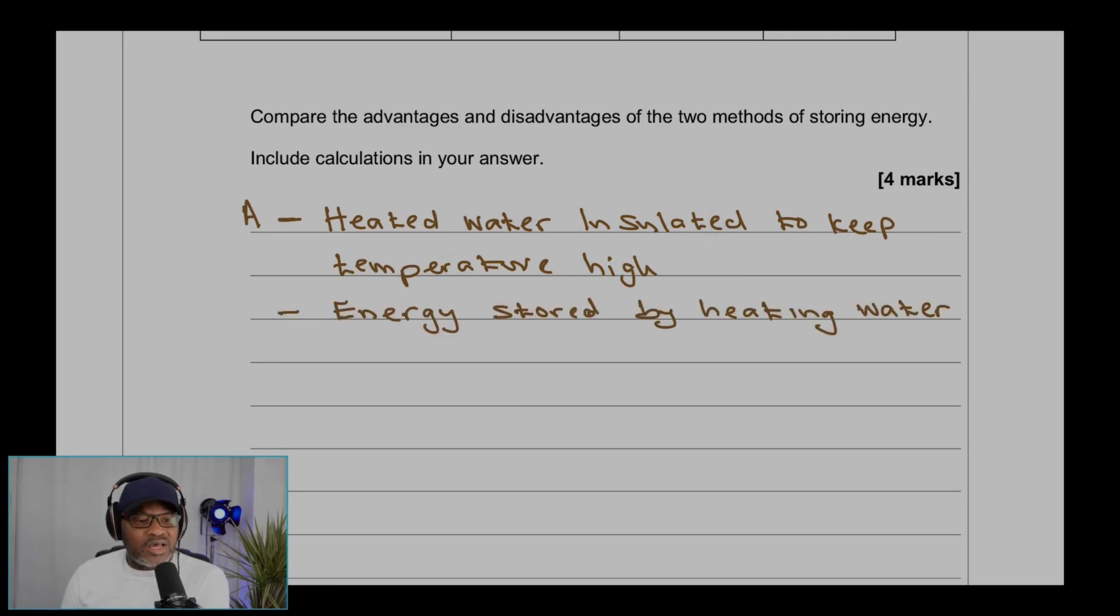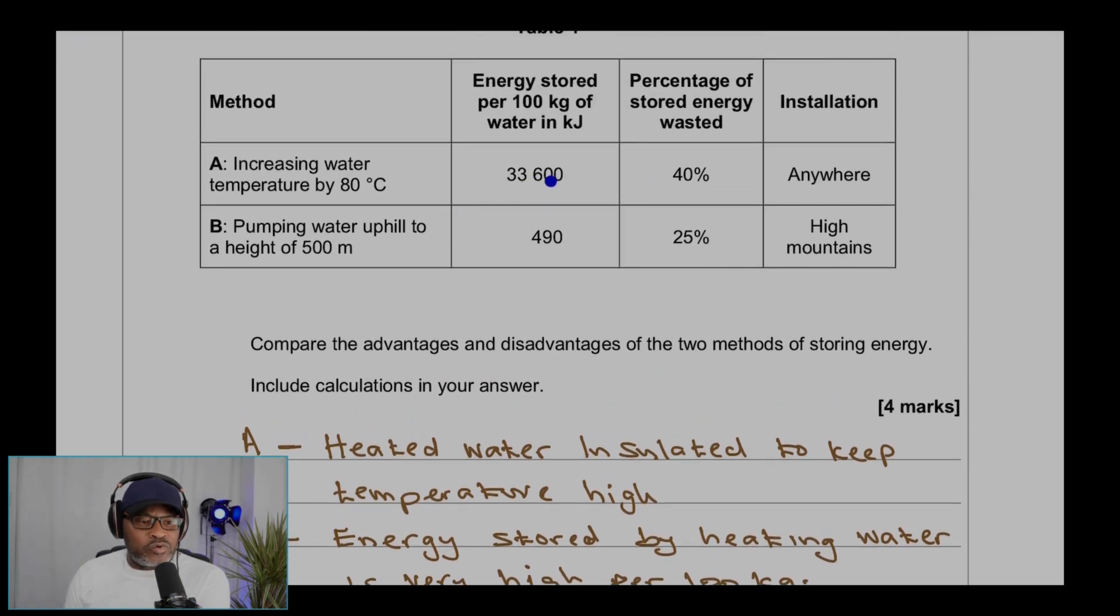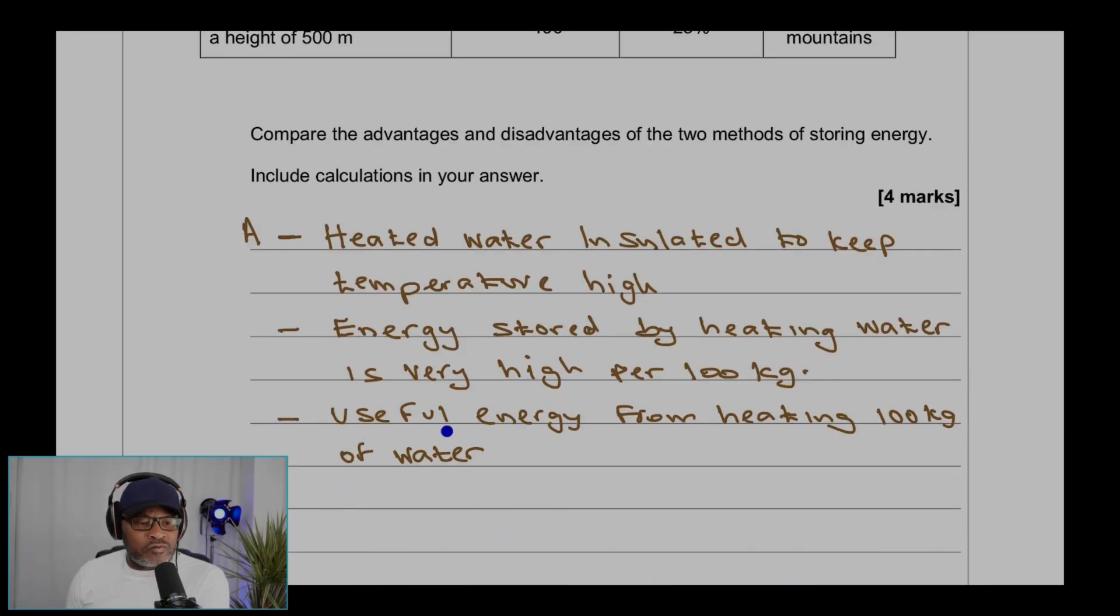For part A, heated water is insulated to keep temperature high. Energy stored by heating water is very high per 100 kilograms. If you look here, this is the energy stored by heating 100 kilograms of water. That's a very high energy compared to 100 kilograms of water when you pump it up the hill, that's 490.